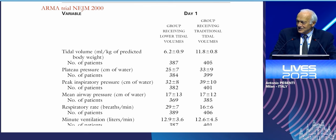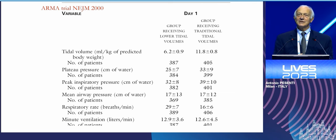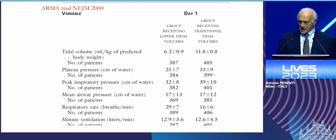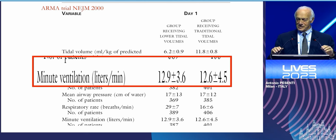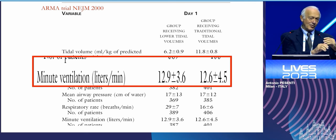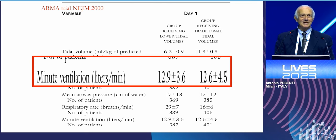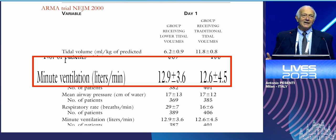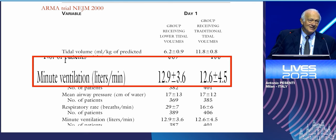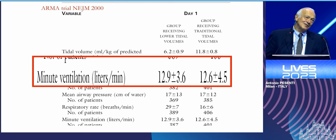This is a slide from the original 6 against 12 milliliters per kilo study, which showed that patients ventilated with 6 milliliters per kilo survived more than those ventilated with 12 milliliters per kilo. If we look at minute ventilation — total ventilation — we see that both the low and high tidal volume groups were ventilated at crazy numbers: 13 liters per minute, while normal ventilation at rest is between 5 and 6 liters per minute.